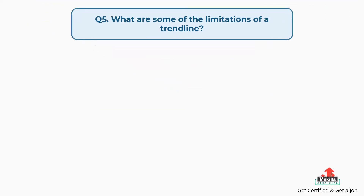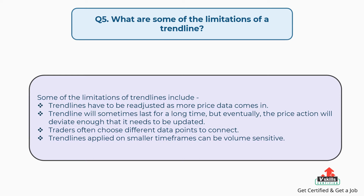Question number 5: What are some of the limitations of a trendline? Some limitations of trendlines include: firstly, trendlines have to be readjusted as more price data comes in; secondly, a trendline will sometimes last for a long time, but eventually the price action will deviate enough that it needs to be updated; moreover, traders often choose different data points to connect; and lastly, trendlines applied on smaller timeframes can be volume sensitive.